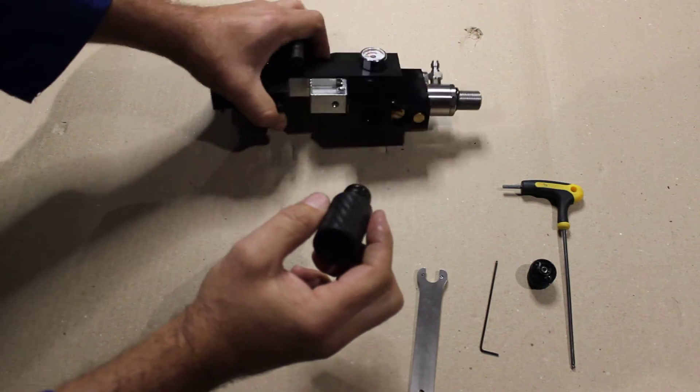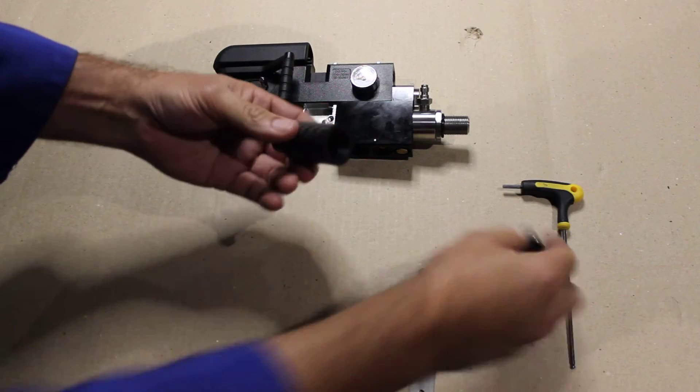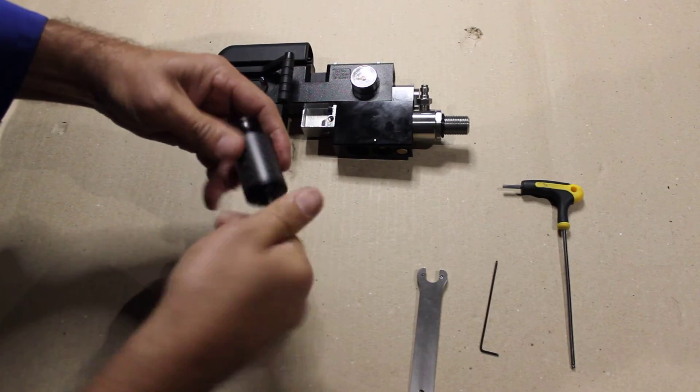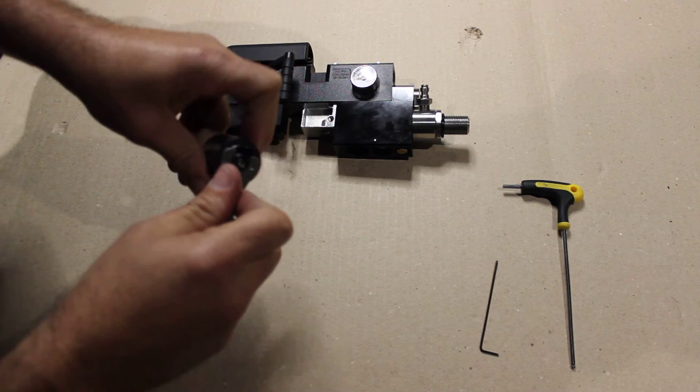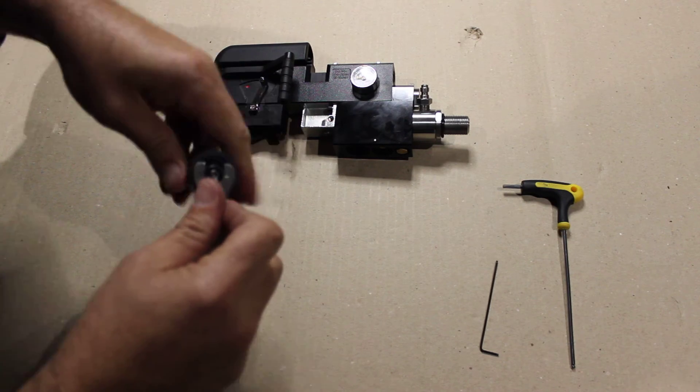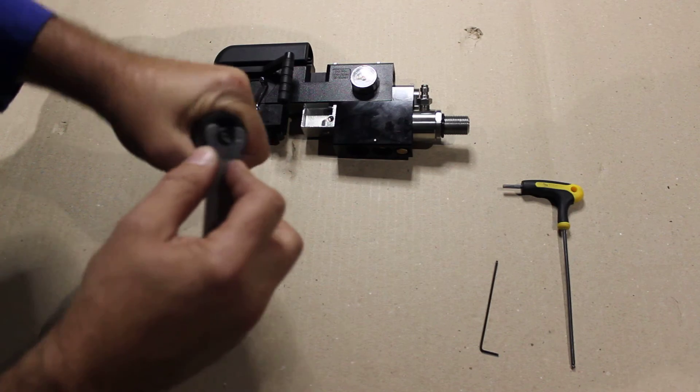Then you take your plenum. You can either install that first or put the nut in there. Install that and tight is fine.